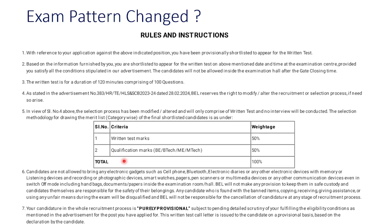I got many messages regarding the admit card. For those who are facing issues downloading it, I already uploaded a video on how to download your admit card. For those who missed their application number, you can go to the official website — there are two options. You can directly download your admit card from one link, and from another link you can get the shortlisted candidates list as a PDF. Check that PDF for your name, find your application number, then go to the download admit card link, enter your application number, and you will get your admit card.